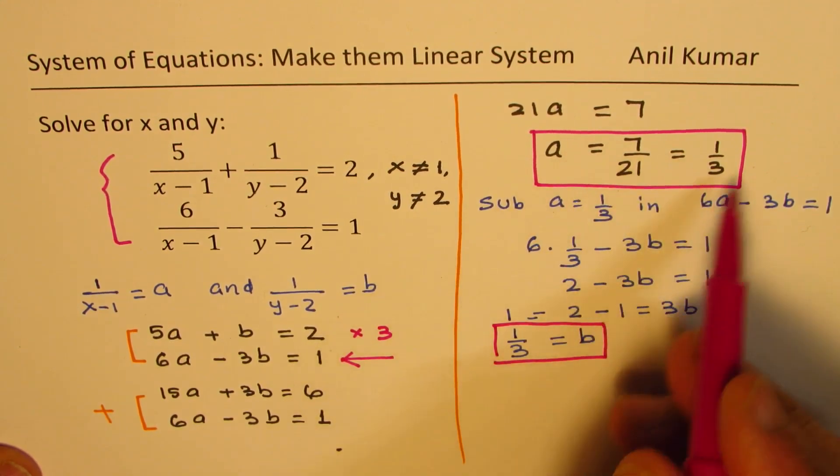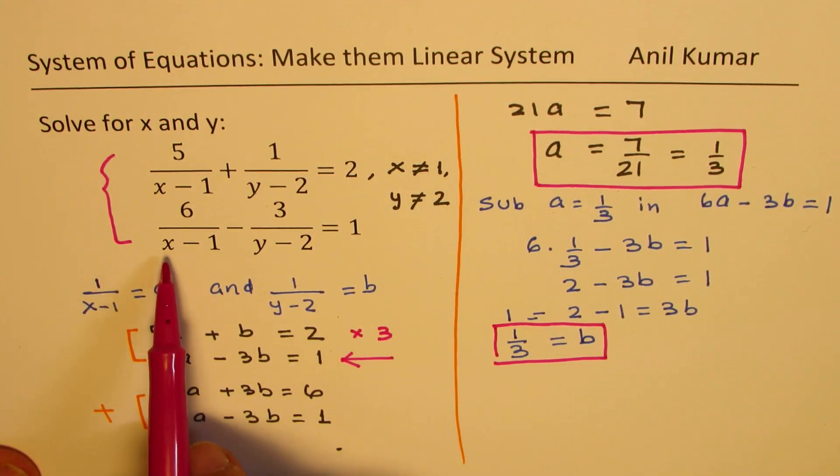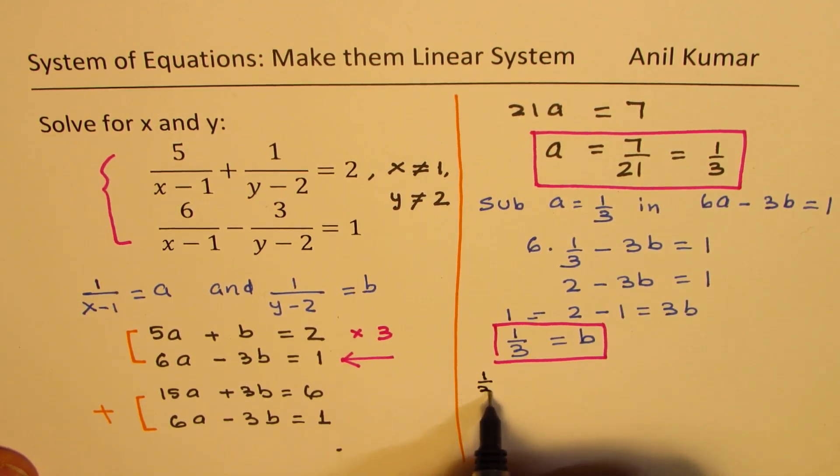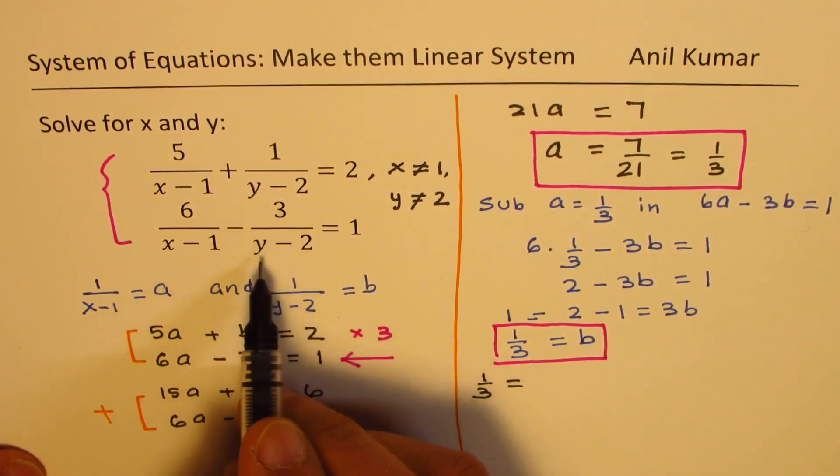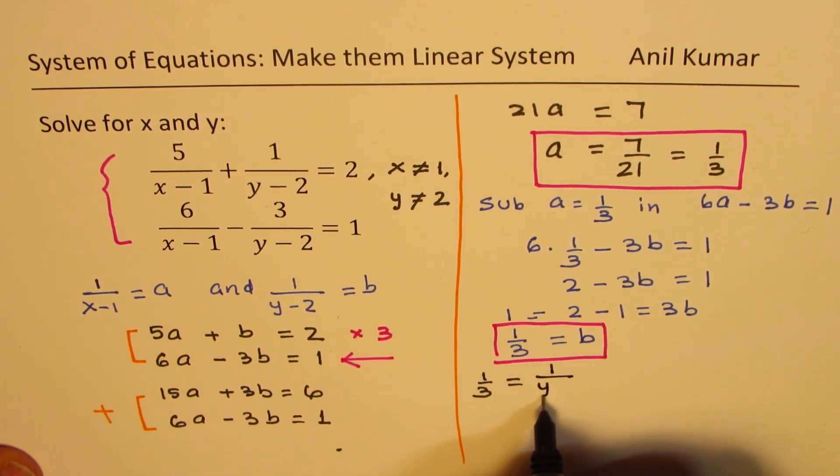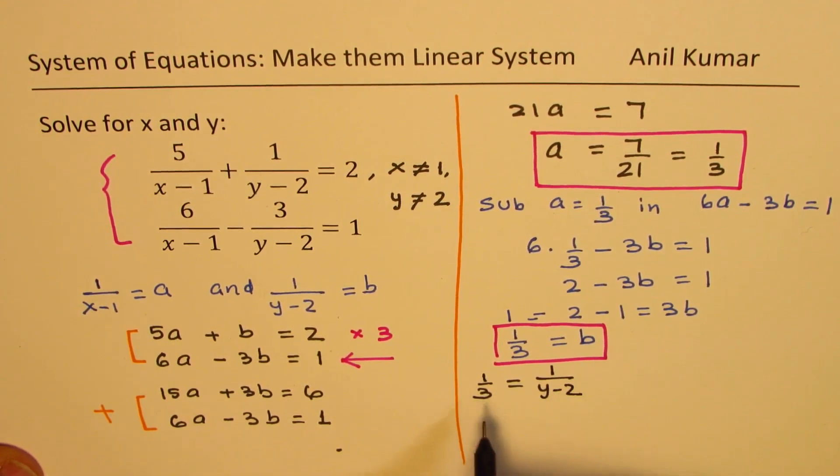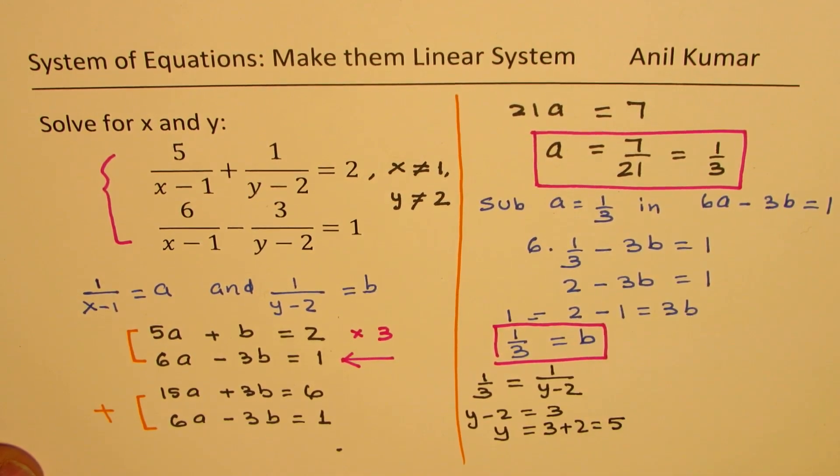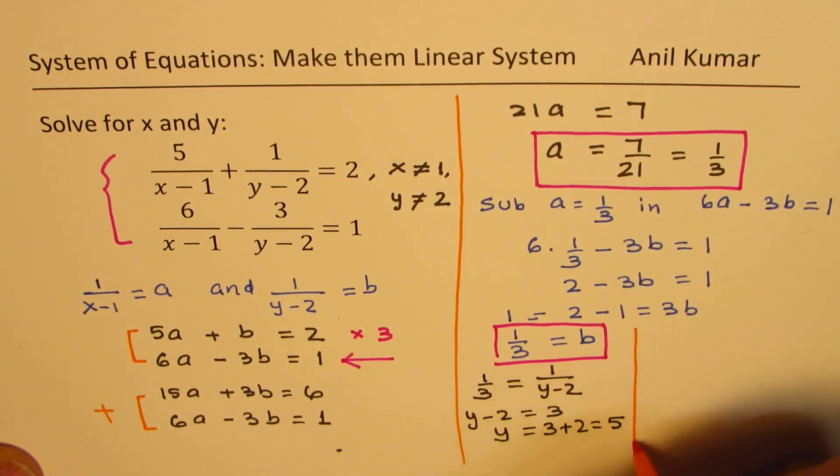Once we have the value of a and b, we can find the value of x and y. So reversing the substitution, b is 1 over 3. So we know 1 over 3 is equal to 1 over y minus 2. Cross multiply, we get y minus 2 equals 3. Or y is equal to 3 plus 2, which is equal to 5. So we get value of y as 5.